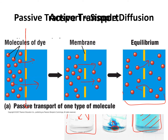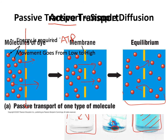Active transport is another type of cell transport, and it is basically the opposite of passive transport. The first difference is that energy is required — if you're being very active, you're using a lot of energy. So for active transport to occur, the cell has to use energy, usually in the form of ATP. The second difference is that the movement of molecules goes from an area of low concentration to an area of high concentration, which is not a natural type of movement, which is why energy has to be put into this.